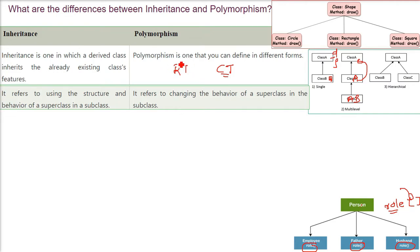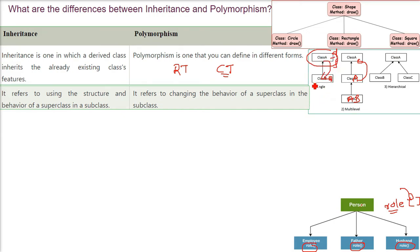Runtime polymorphism is only possible when the inheritance scenario is there. Inheritance refers to using the structure and behavior of a superclass in a subclass. Just like when you inherit your father's property, you have all the property — you are actually having his property in your pocket.